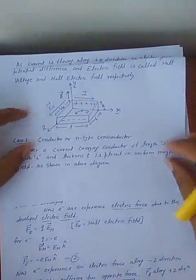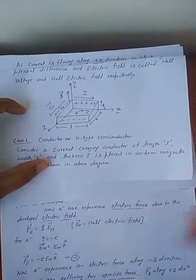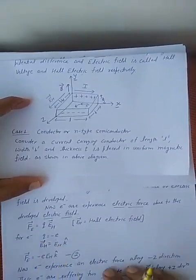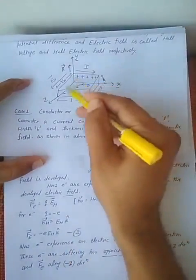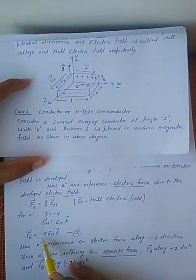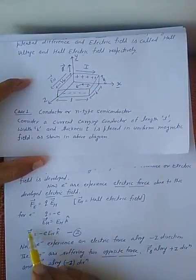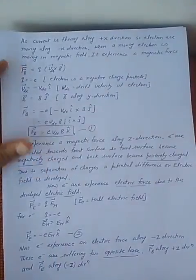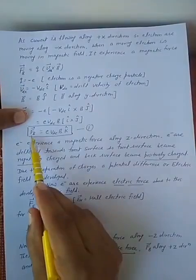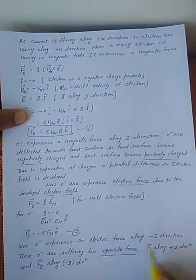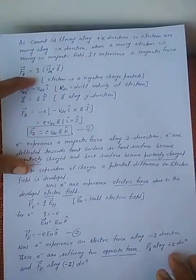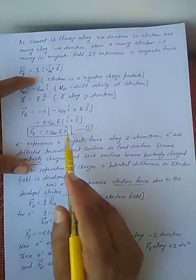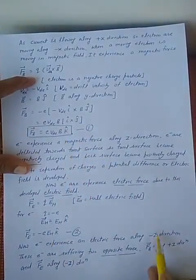Now electrons experience an electric force due to the development of the Hall electric field. F = Q × E, where the electron charge is minus e and the electric field E_H is in the k̂ direction. So F = −e · E_H k̂, meaning the electron experiences the electric force in the minus k̂ direction. So the magnetic force is in the plus k̂ direction and the electric force is in the minus k̂ direction — minus z-direction. These moving electrons experience two opposite forces.